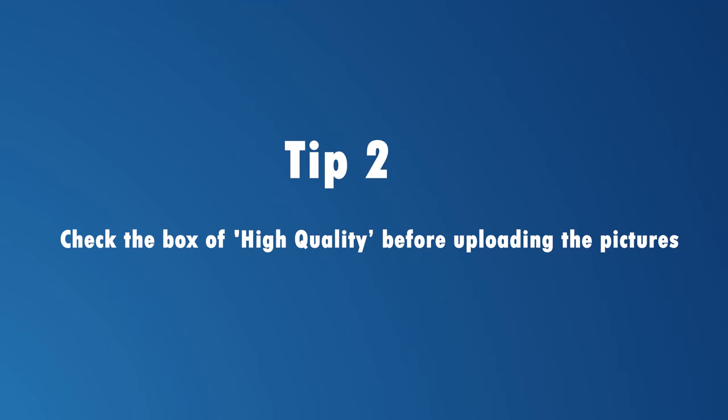Tip two: check the box of high quality before uploading. If you're using the Facebook app on iPhone or Android, you may configure your account settings to always upload HD quality images. However, it's best to upload from a computer for the best quality. When uploading from a mobile device, image quality suffers as a result of increased compression, which can be resolved by changing the picture settings covered earlier in this video.